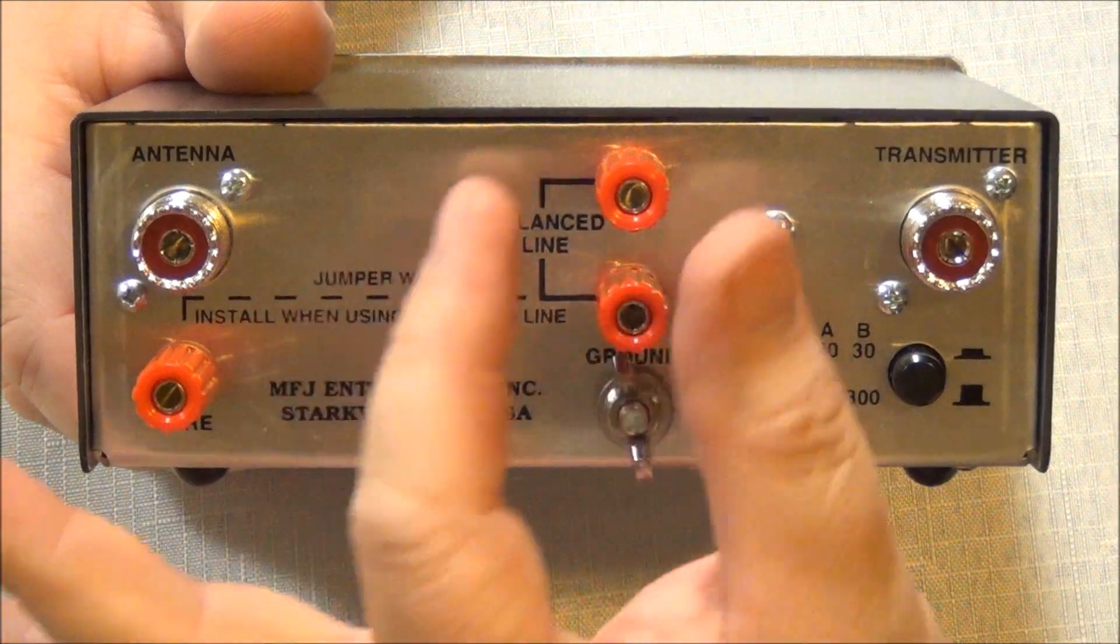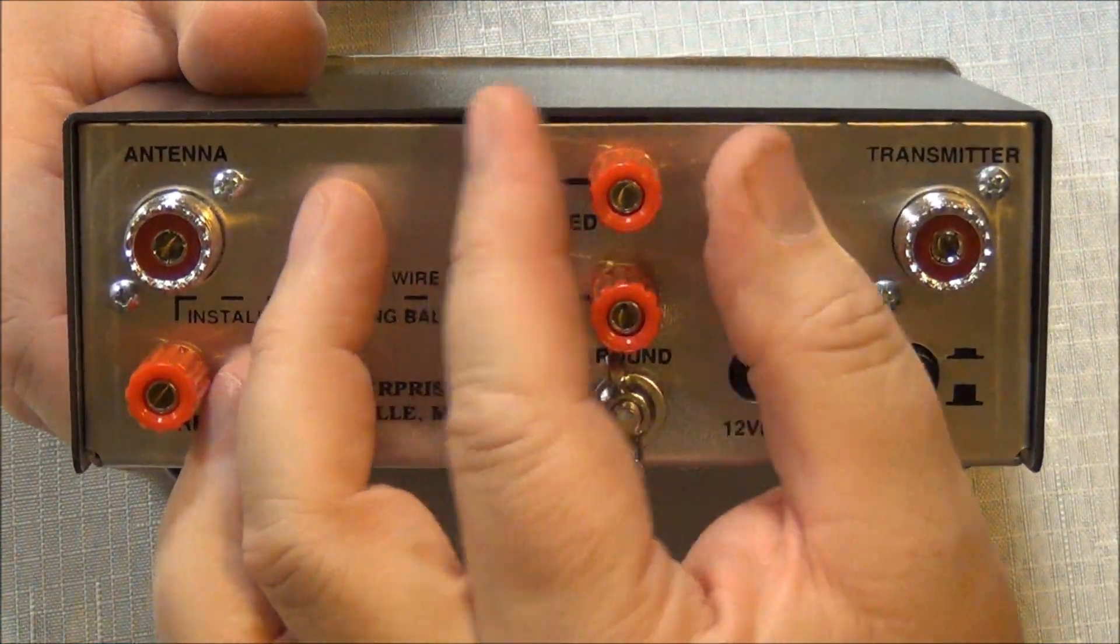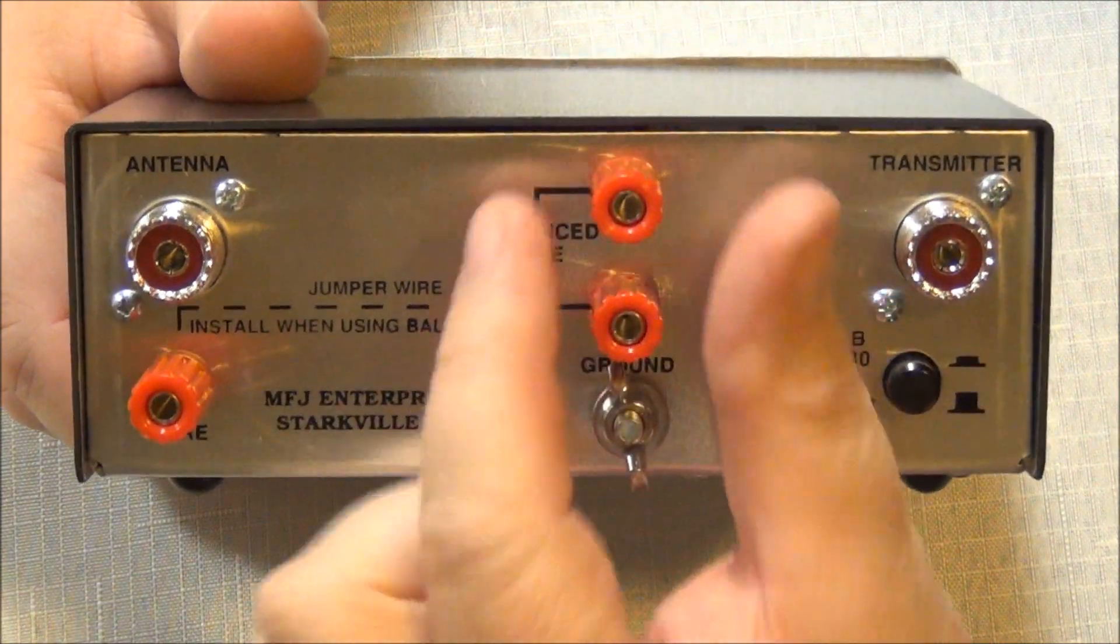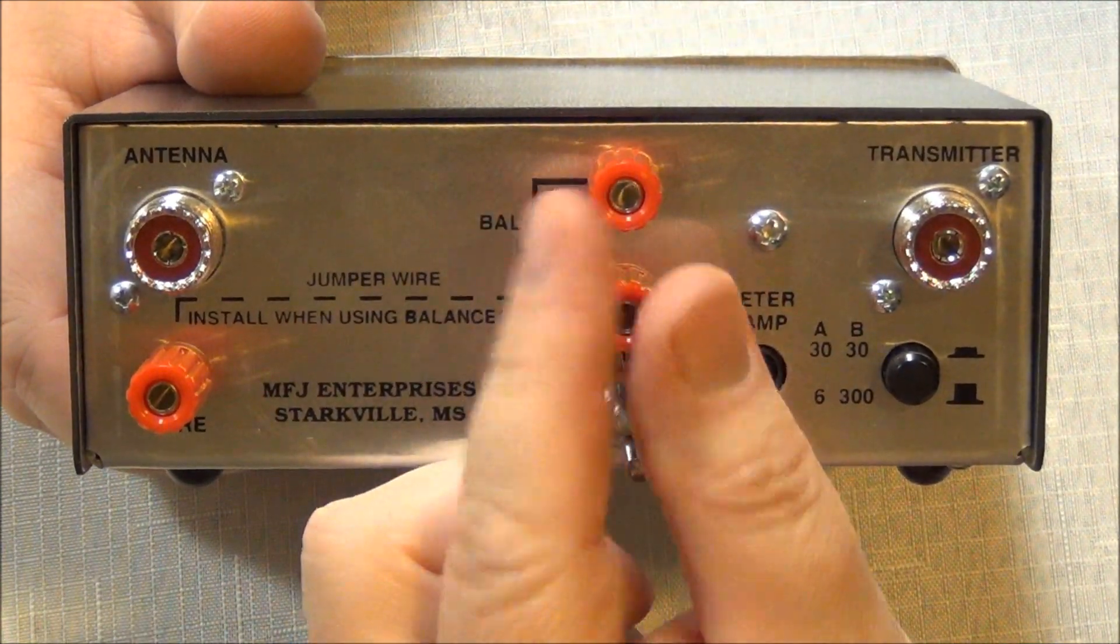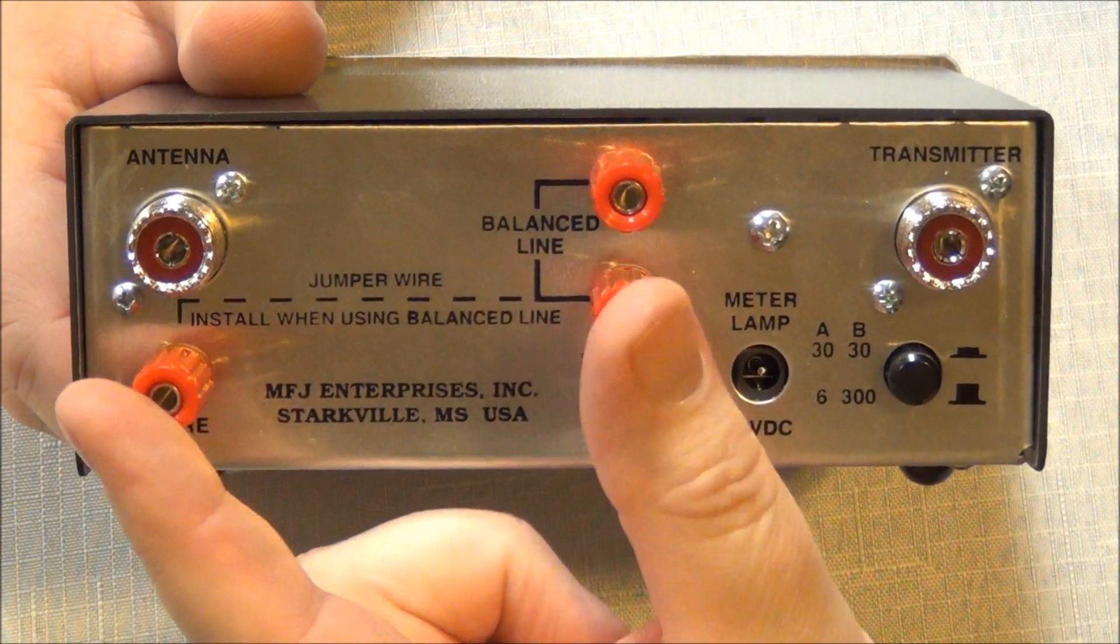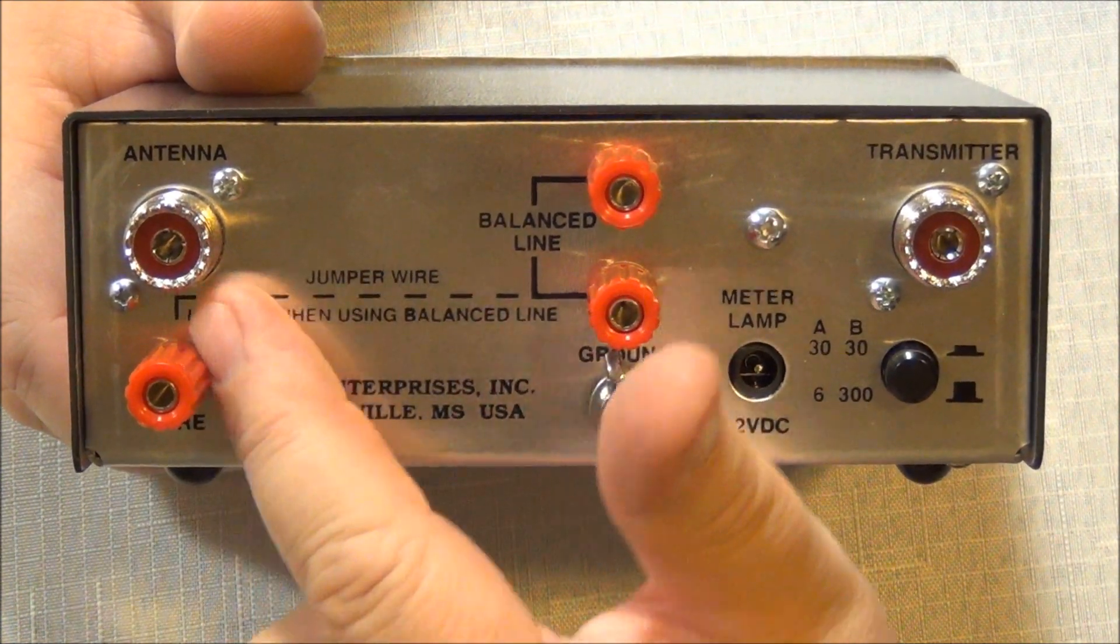You can use a balanced line, like a ladder line, and it would connect into these little terminals here. Now if you're going to use a balanced ladder line, you also need to put a little jumper wire from here to here. And it says that right here on the back.